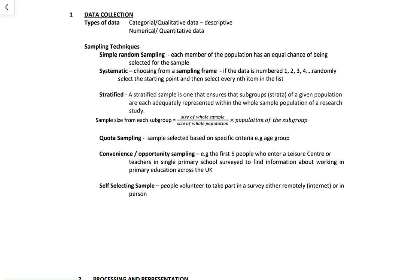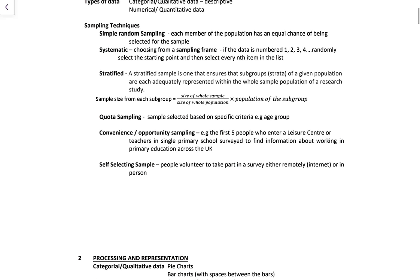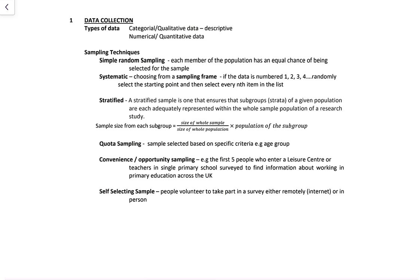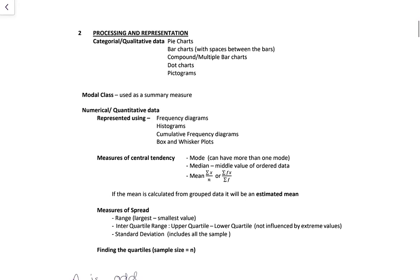Stratified sampling ensures the subgroups or strata of a given population are each adequately represented within the whole sample. The sample size for each subgroup equals the size of the whole sample divided by the size of the whole population, times the population of the subgroup. Quota sampling — sample selected based on specific criteria, such as age group.